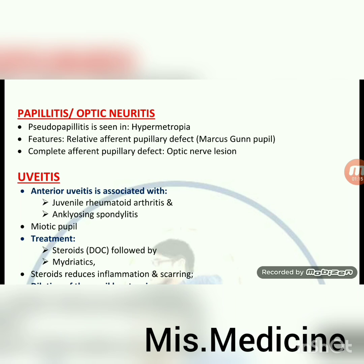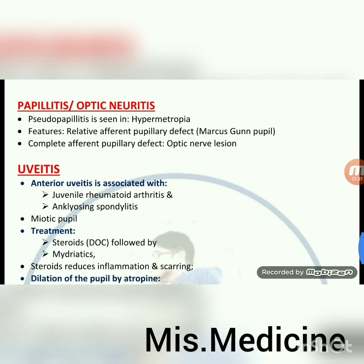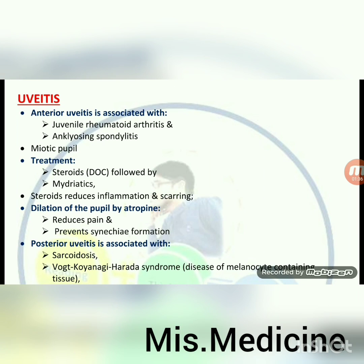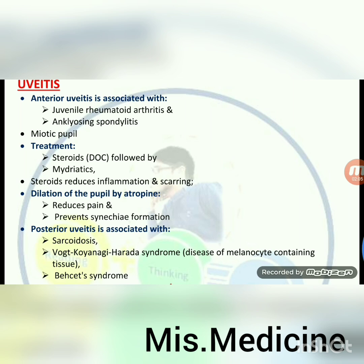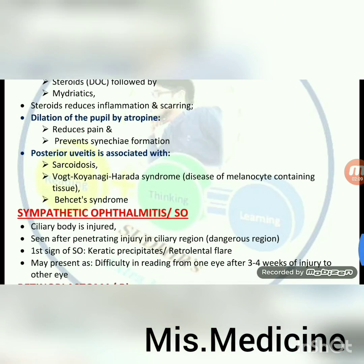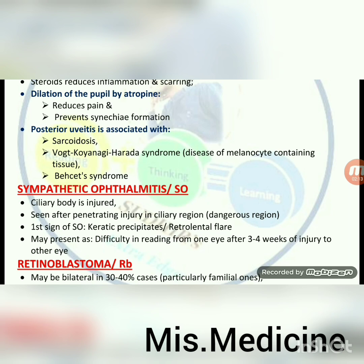Papillitis or optic neuritis. Pseudopapillitis seen in hypermetropia. Features: relative afferent pupillary defect (Marcus Gunn pupil), complete afferent pupillary defect, optic nerve lesions. Uveitis: anterior uveitis associated with juvenile rheumatoid arthritis and ankylosing spondylitis; miotic pupil. Treatment of uveitis: steroids (drug of choice), followed by mydriatics. Steroids reduce inflammation and scarring. Dilation of pupil by atropine reduces pain and prevents synechiae formation. Posterior uveitis associated with sarcoidosis, Vogt-Koyanagi-Harada syndrome (disease of melanocyte-containing tissue) and Behçet's syndrome.